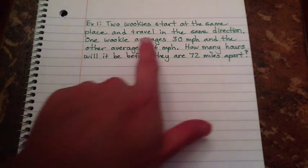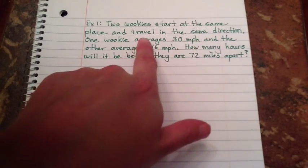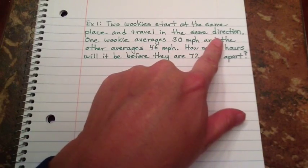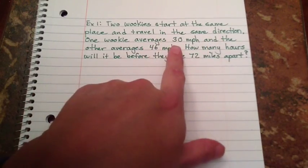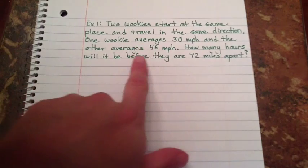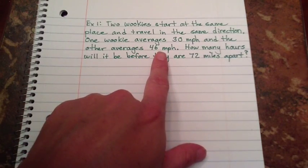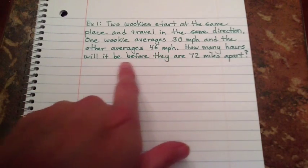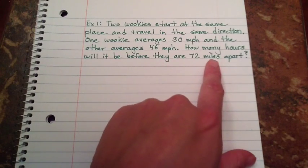It talks about two Wookiees start at the same place, and they travel in the same direction. One Wookiee is averaging 30 miles per hour, and the other averages 46 miles per hour. How many hours will it be before they are 72 miles apart?